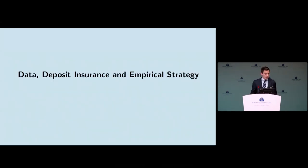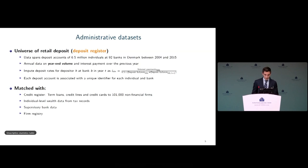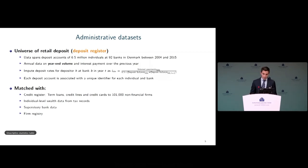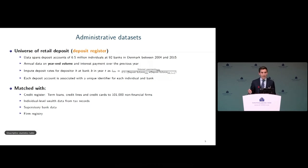At the core of our analysis is this deposit register, essentially the universe of retail deposit accounts in the Danish economy, covering every single deposit account at 92 banks in Denmark between 2004 and 2015. This data covers roughly 6.5 million individuals. For each deposit account, we observe the year-end volume as well as the interest payment over the previous year, which allows us to back out the interest rate on that deposit account.